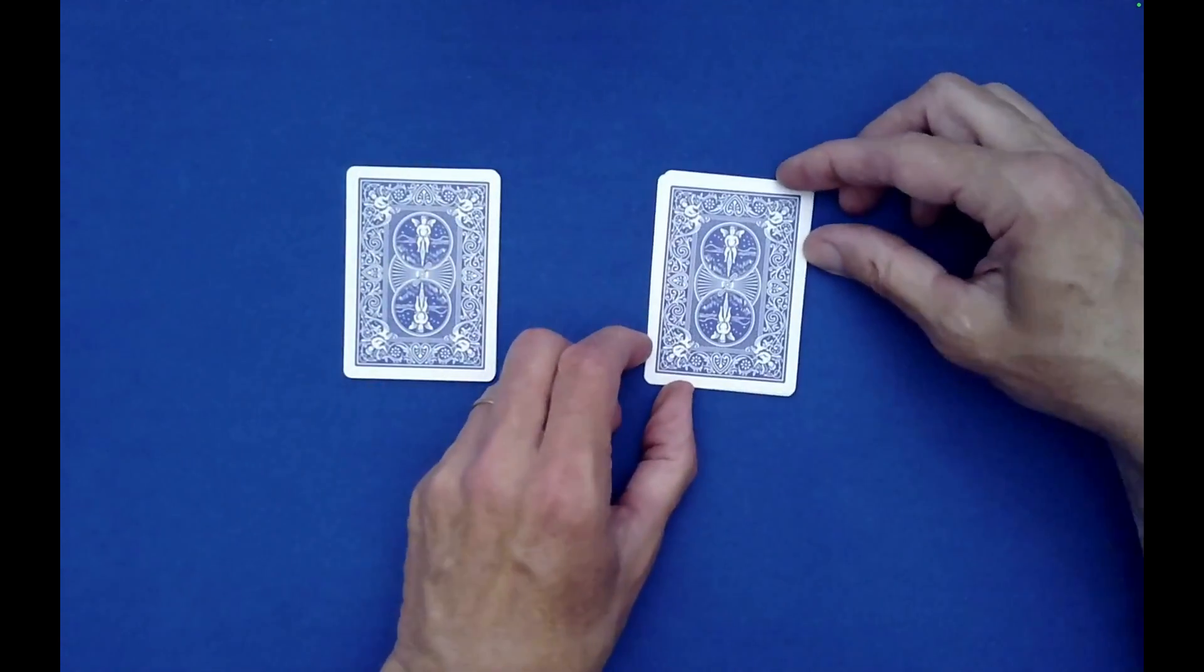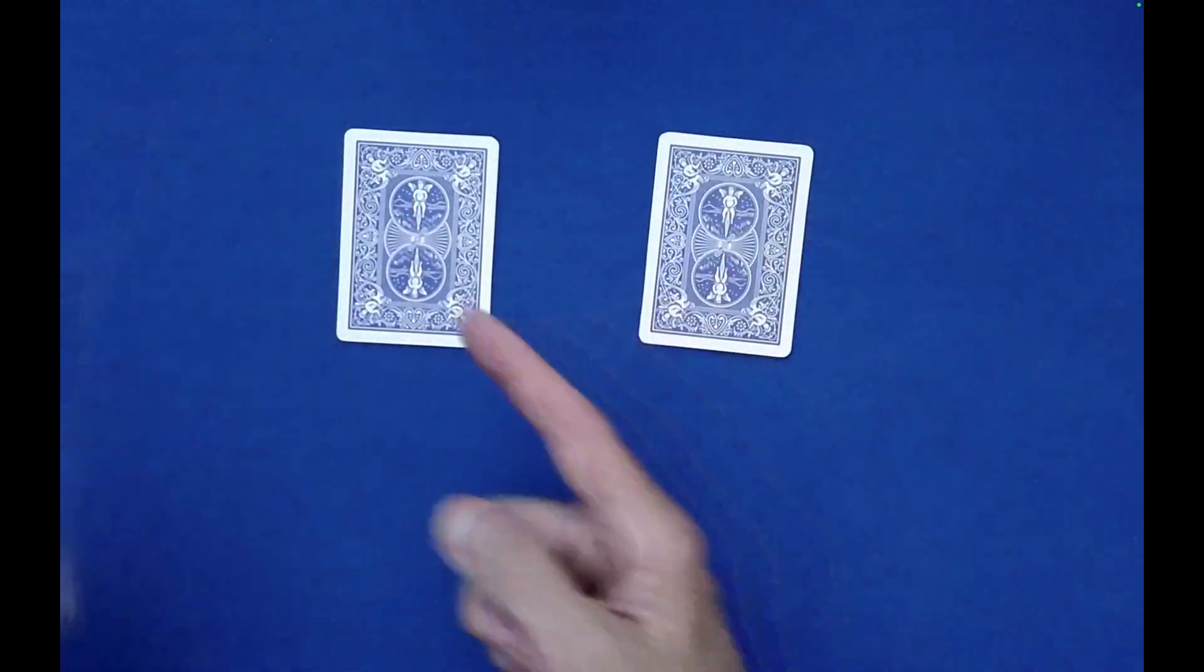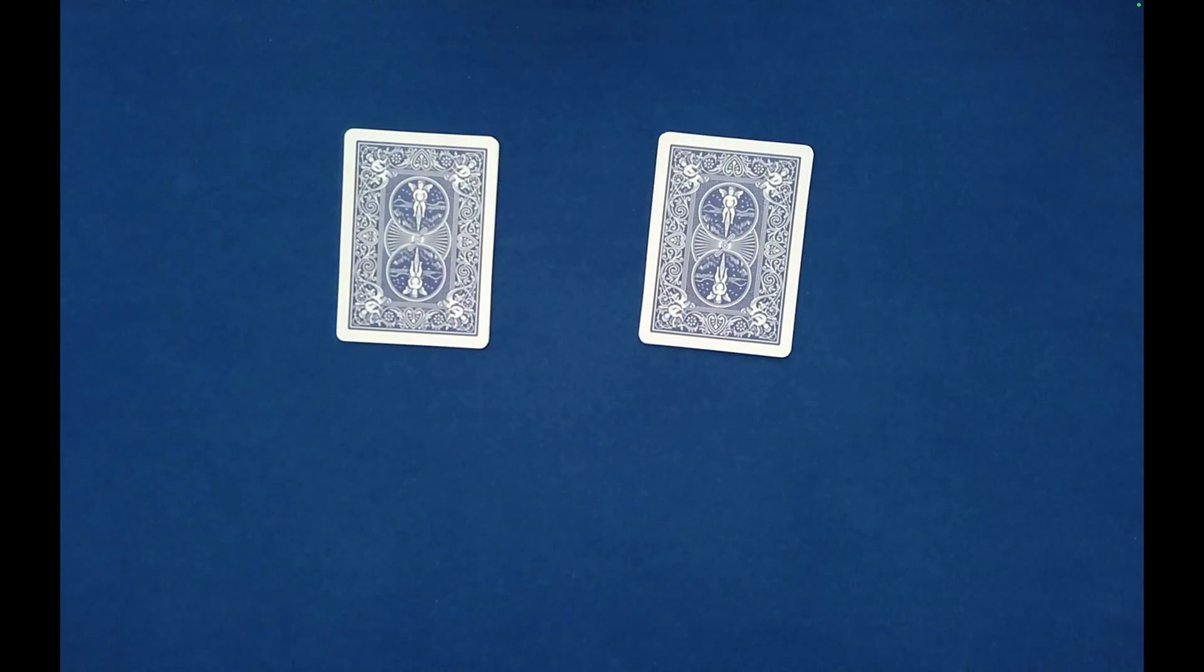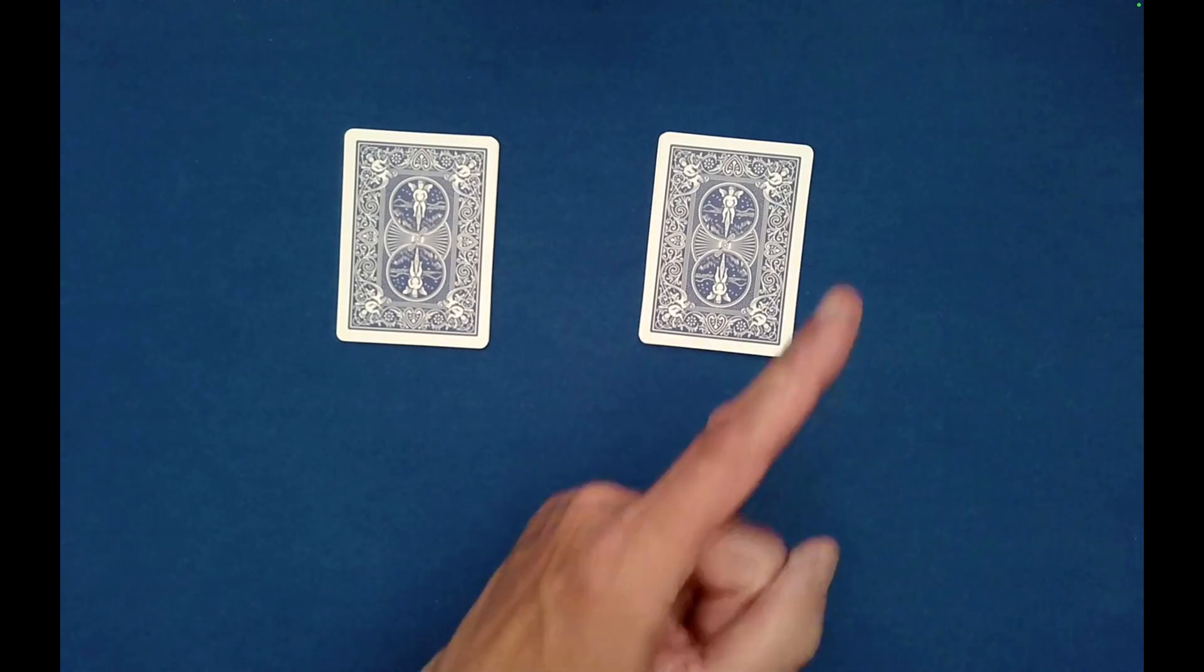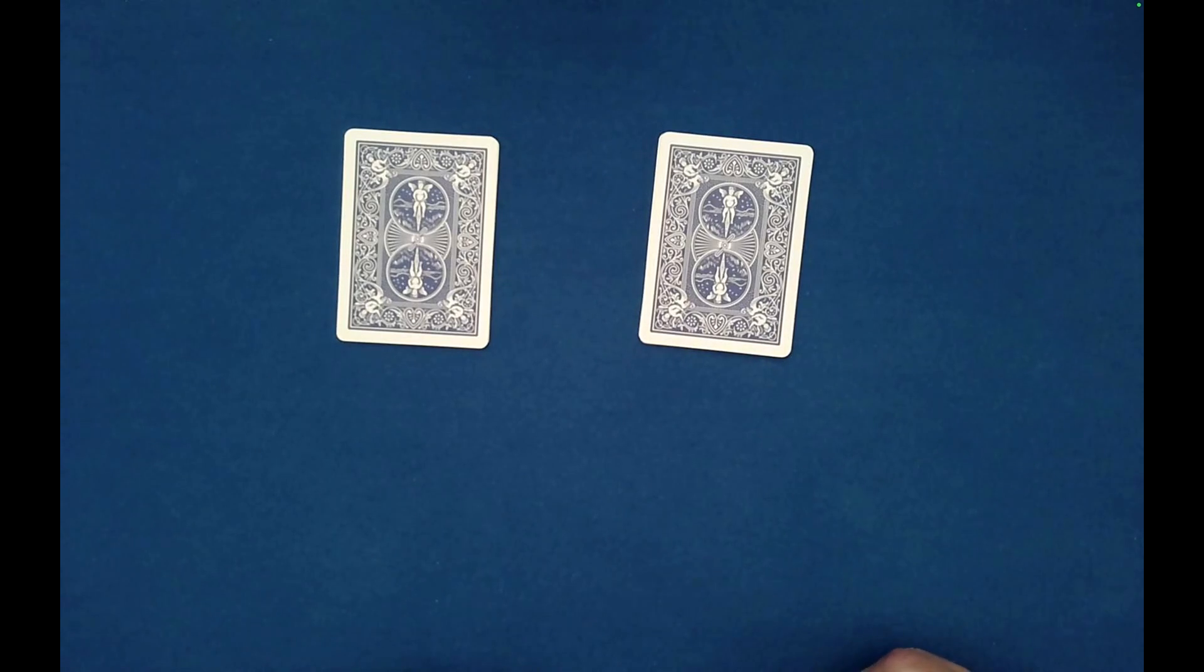And now you turn to Spectator A over here, and you ask them, what is the identity of the card that you saw? And they're going to say, Ace of Diamonds. That was their card to remember. And then you turn to Spectator B, what was your card that you saw? And they'll say, Two of Diamonds.